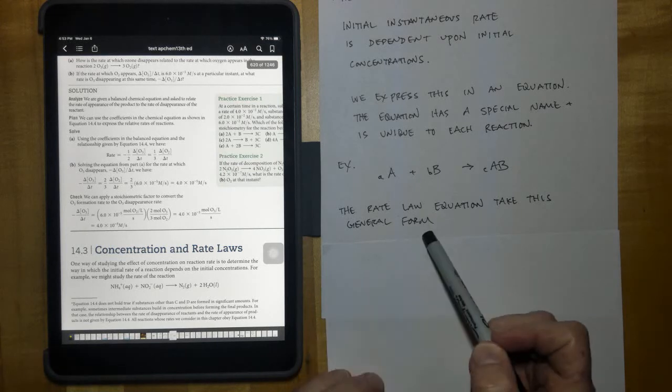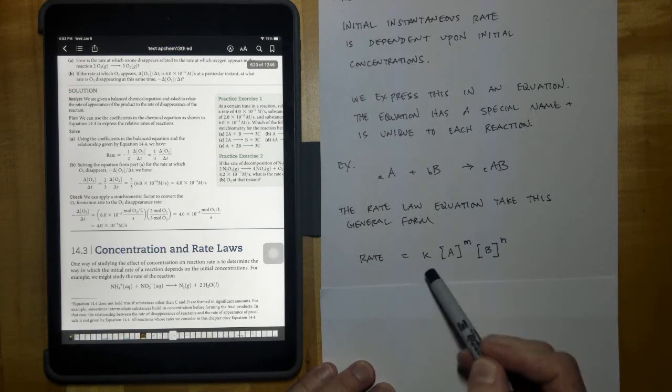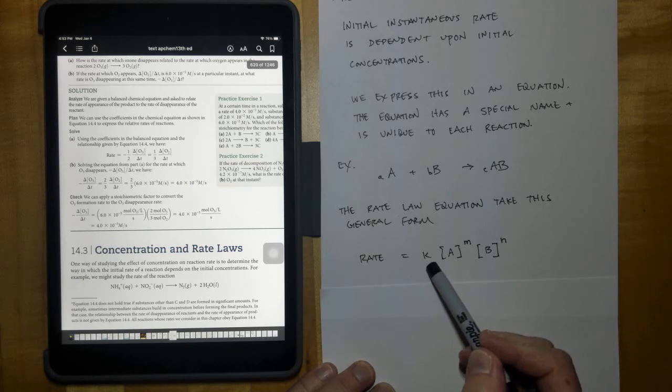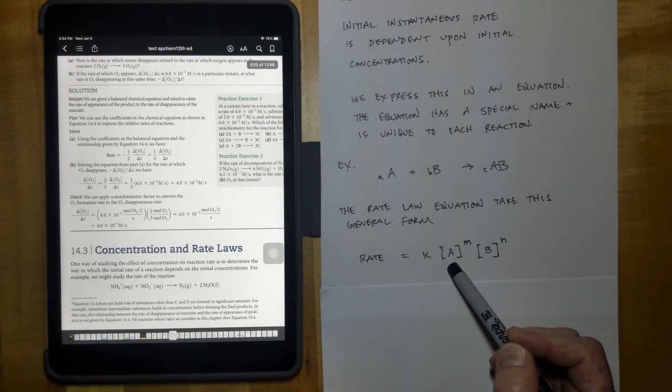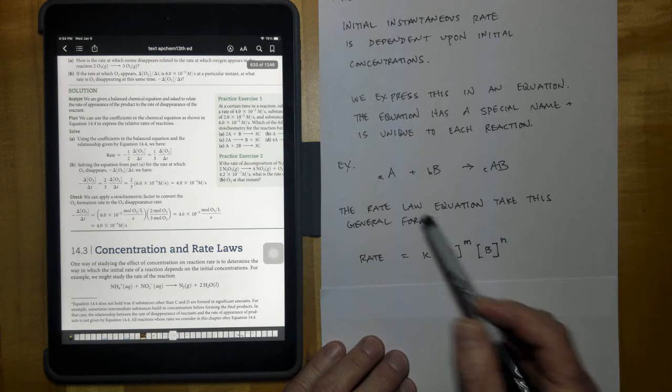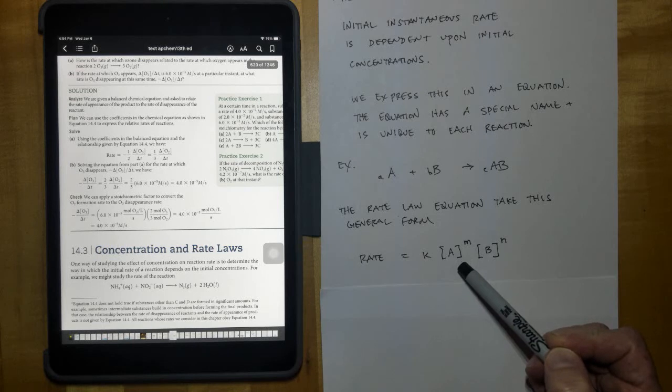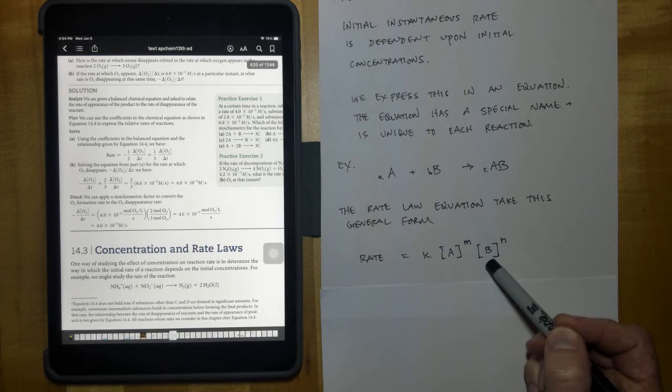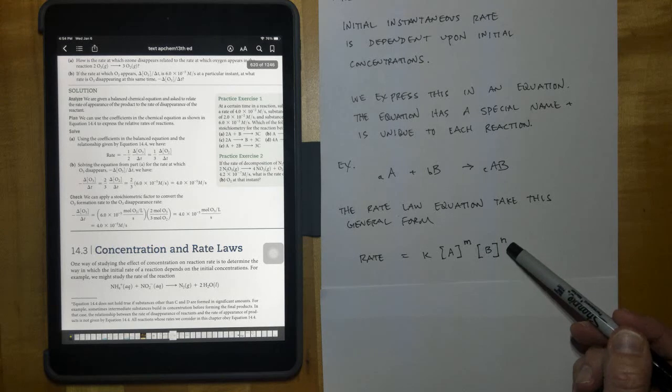And the rate law equation always takes this form. The word rate, R-A-T-E, you have to write the word, equals sign, a small letter k. It has to be a lowercase letter k. The brackets around the first element or substance that is in the equation raised to a particular power. Notice it's in brackets and that means concentration of. The brackets around the second reactant. If there was a third, you'd put brackets around that as well. And then you'd raise that to a particular exponent as well.